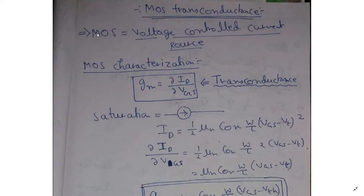Now, you know there are two kinds of voltage in MOSFET: one is VGS and another is VDS. When I want to measure the change in output current with respect to change in input voltage, which input voltage should we take? Should we take the change in output current with respect to VGS or with respect to VDS? Later we will see that MOSFET amplifiers are most important in analog electronics, and MOSFET amplifiers are first biased in saturation region — the DC operating point of MOSFET is set at saturation region.